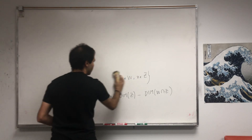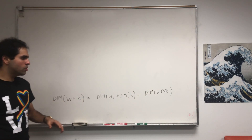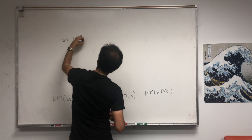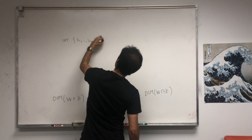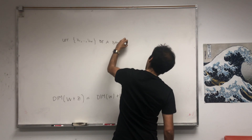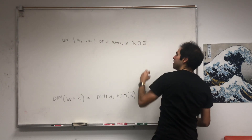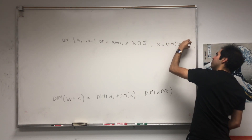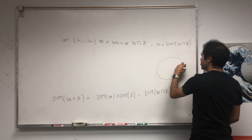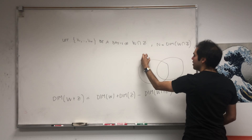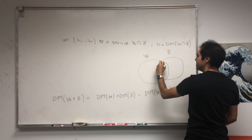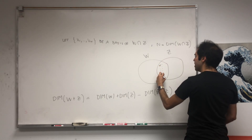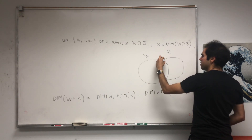It's one of the beautiful results in linear algebra. First, we will start with a basis for the intersection. Let v1 up to vn be a basis of W intersect Z, where n is by definition the dimension of W∩Z. So we have on one hand our subspace W, on the other hand our subspace Z, and we found a basis of W∩Z: v1 up to vn.